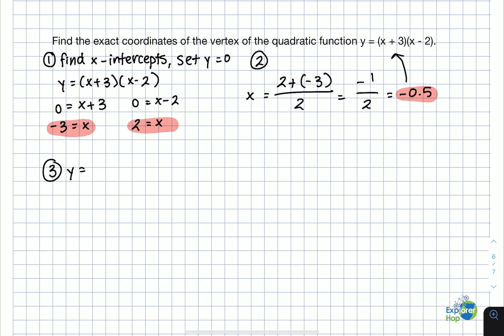So now, we take the equation y equals x plus 3 times x minus 2. We substitute in this value, and we get y equals negative 0.5 plus 3 times negative 0.5 minus 2. And now we have y equals 2.5 times negative 2.5, which, if you use a calculator, amounts to negative 6.25.